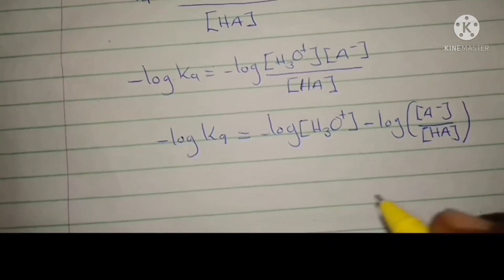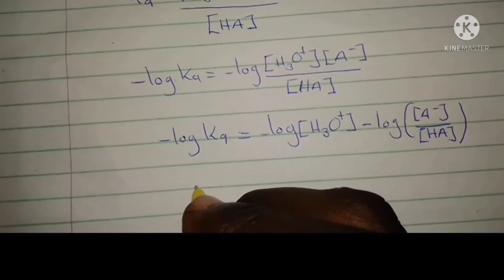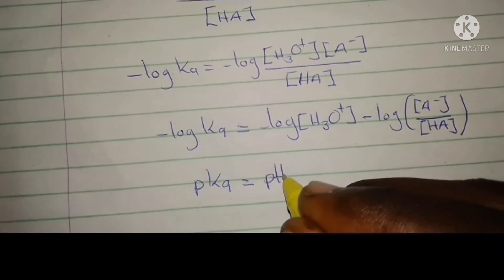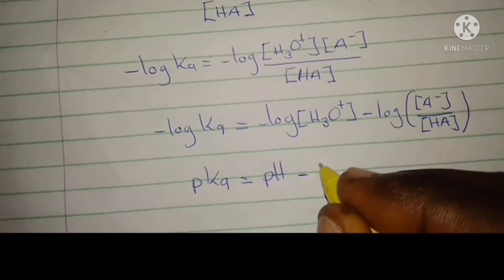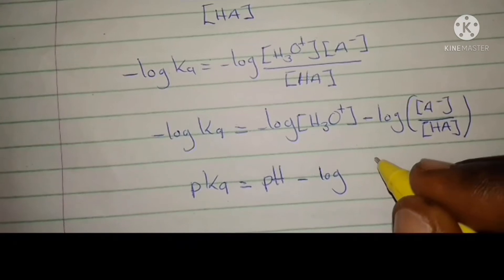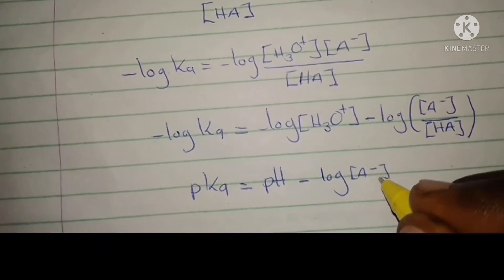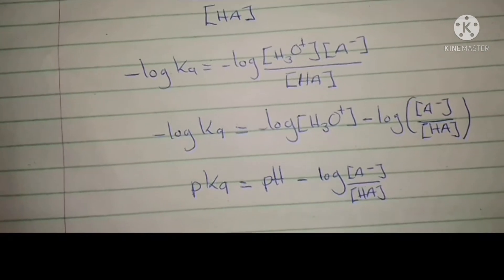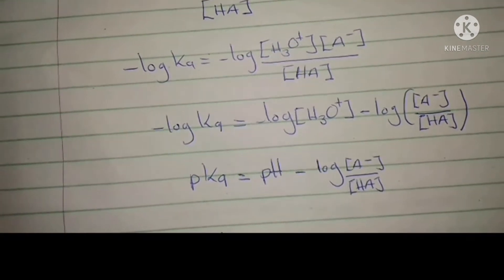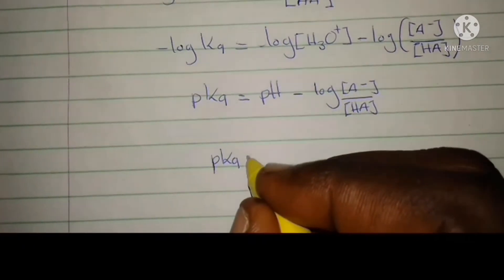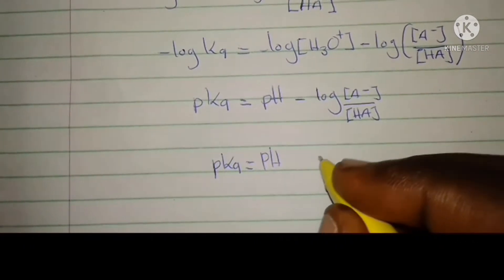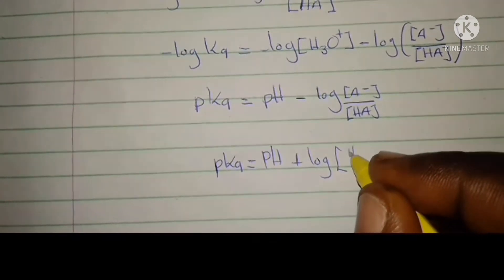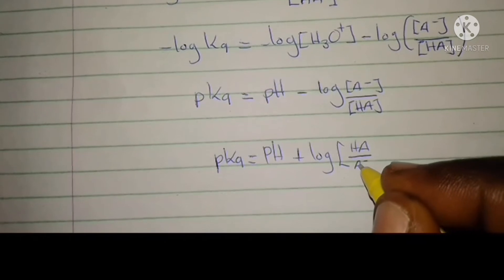So negative log Ka is pKa. Negative log of the hydroxonium ion concentration is the pH. Then minus the log of the concentration of the conjugate base divided by the concentration of the acid gives us pKa equal to pH plus log of the acid concentration over the conjugate base concentration.